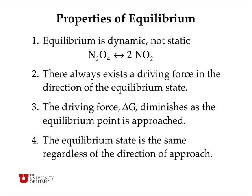The properties of equilibrium are listed here, and the first one is that equilibrium is a dynamic state, not a static state. That is to say that if you allow a system to come to equilibrium, for example the equilibrium between NO2 and N2O4, then even though the concentrations of those species are not changing with time, the reaction itself is occurring both in the forward and the backward direction, but at the same rate.